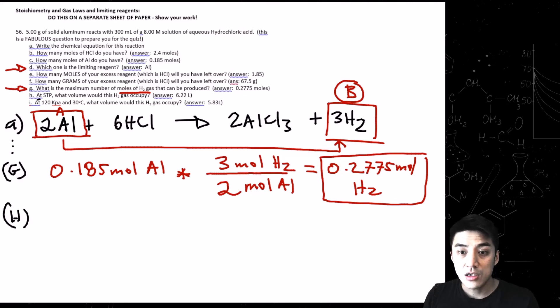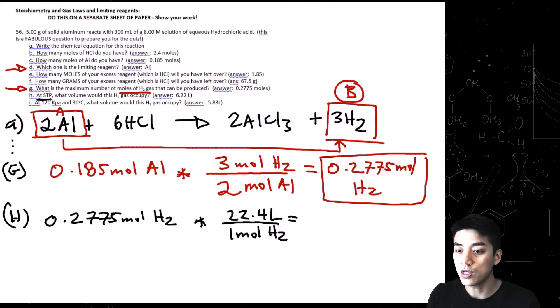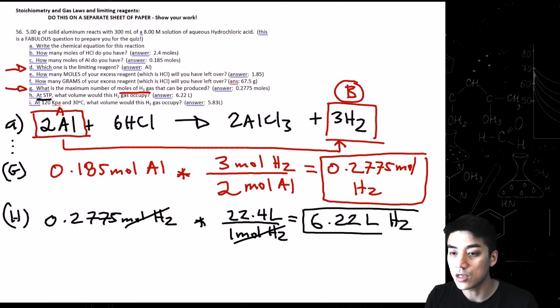Letter H, at STP, that's a huge clue, at STP, what volume would this H2 gas occupy? So take the answer that you found earlier, 0.2775 moles of H2, times sign, draw a line. And remember, Avogadro's principle, one mole of any gas takes up how much space? It's 22.4 liters. So simply multiply 22.4 by 0.2775, we're going to get 6.22 liters of H2.